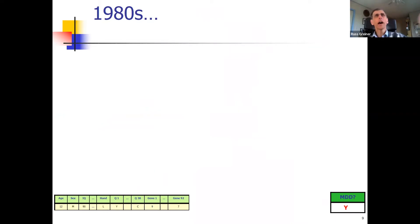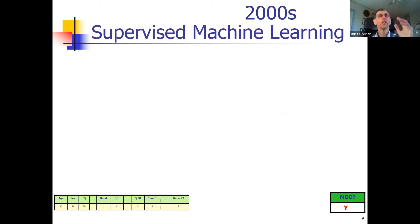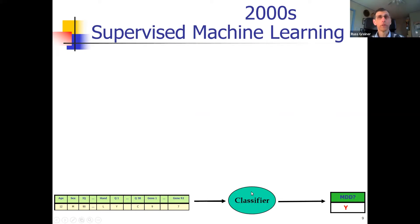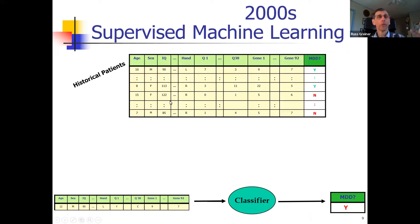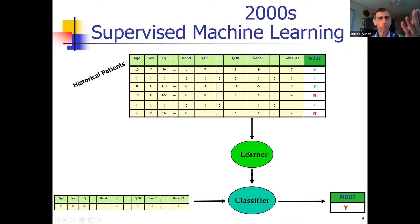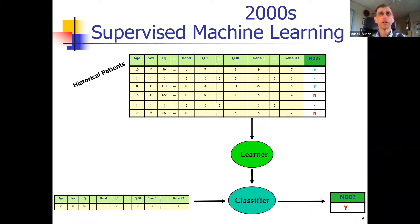That was the 80s. Now let's go forward to the 2000s when supervised machine learning was taking over. The basic question: given a description of a patient, can we predict the outcome? Classifiers would do this. How do you get the classifiers? There was an existing database of similar patients in the past where we knew the answer, and we could build a learning system that could build a classifier from that.